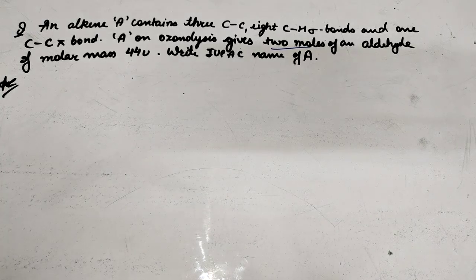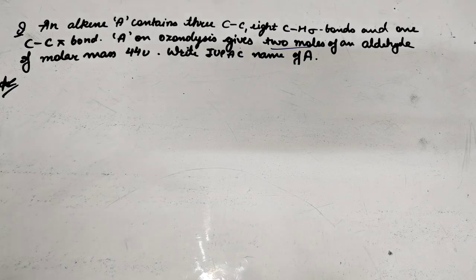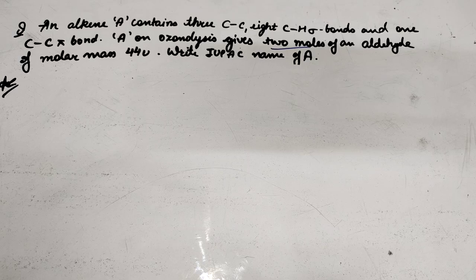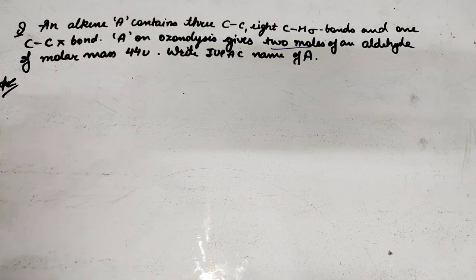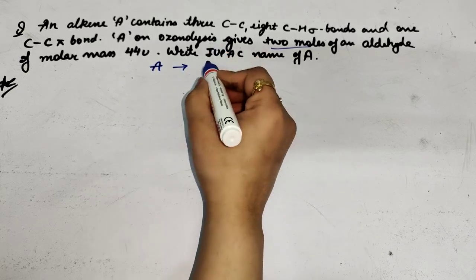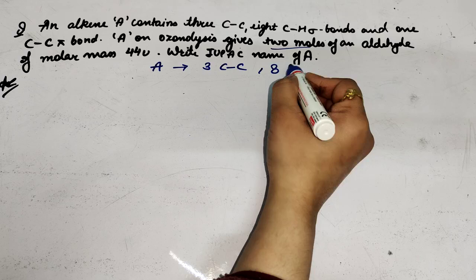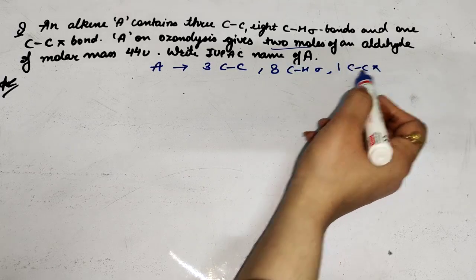Welcome students. Question: An alkyne A contains three C-C single bonds, eight C-H sigma bonds, and one C-C pi bond. A on ozonolysis gives two moles of an aldehyde of molar mass 44u. Find IUPAC name of A. So what do we do first time? An alkyne A contains three C-C bonds, eight C-H sigma bonds, and one C-C pi bond.